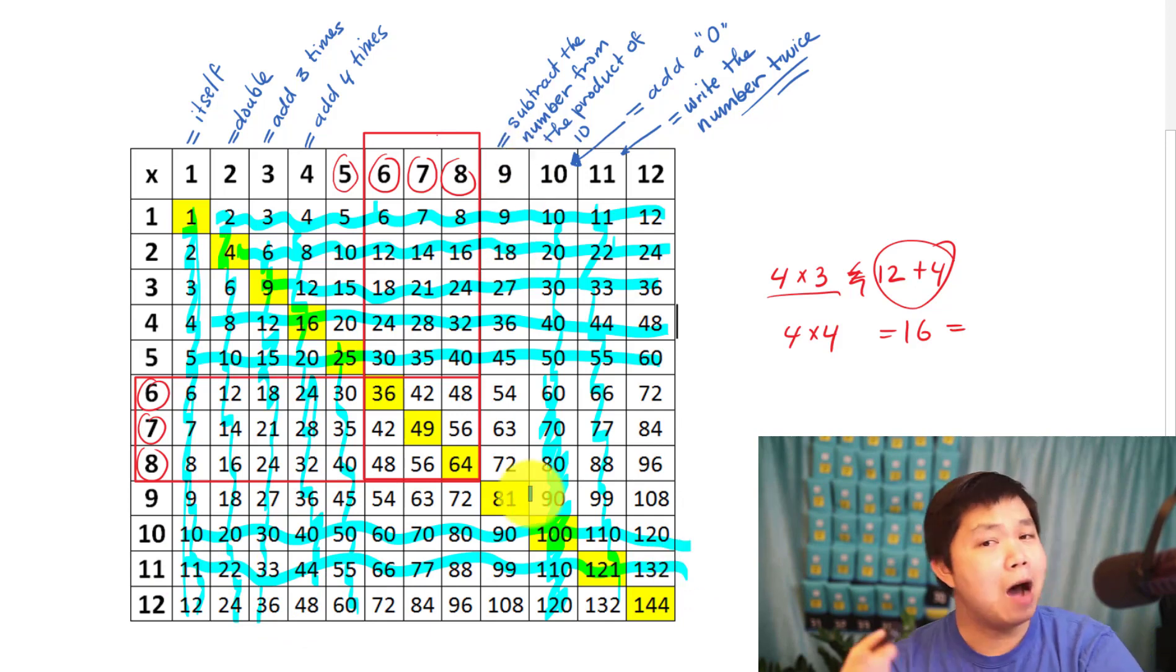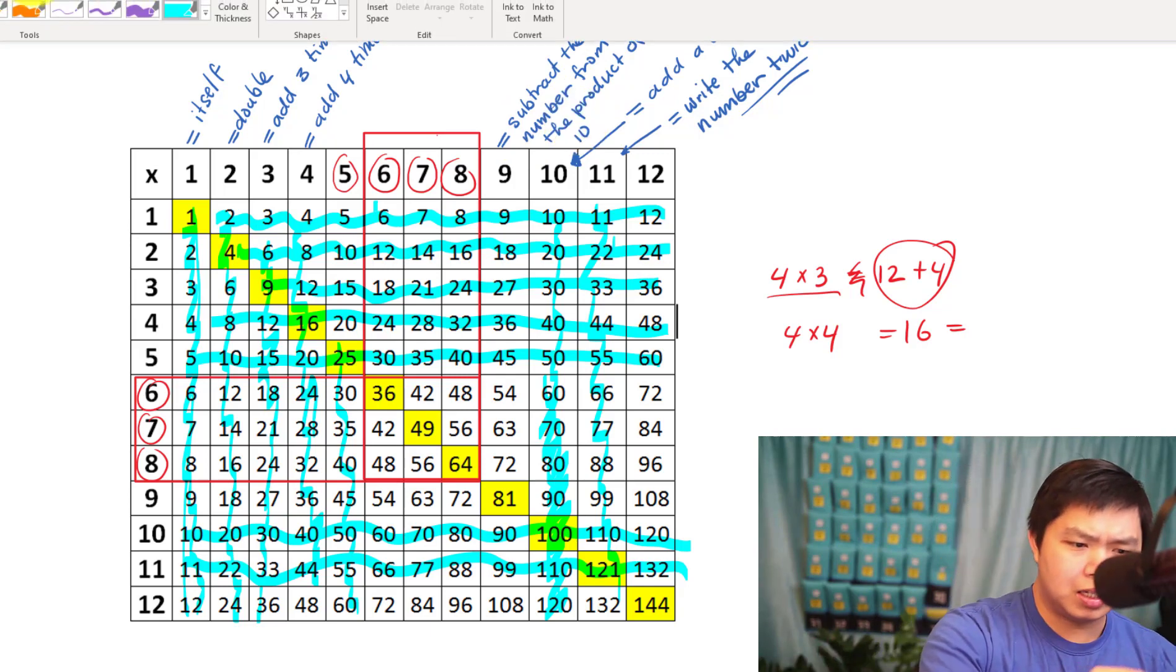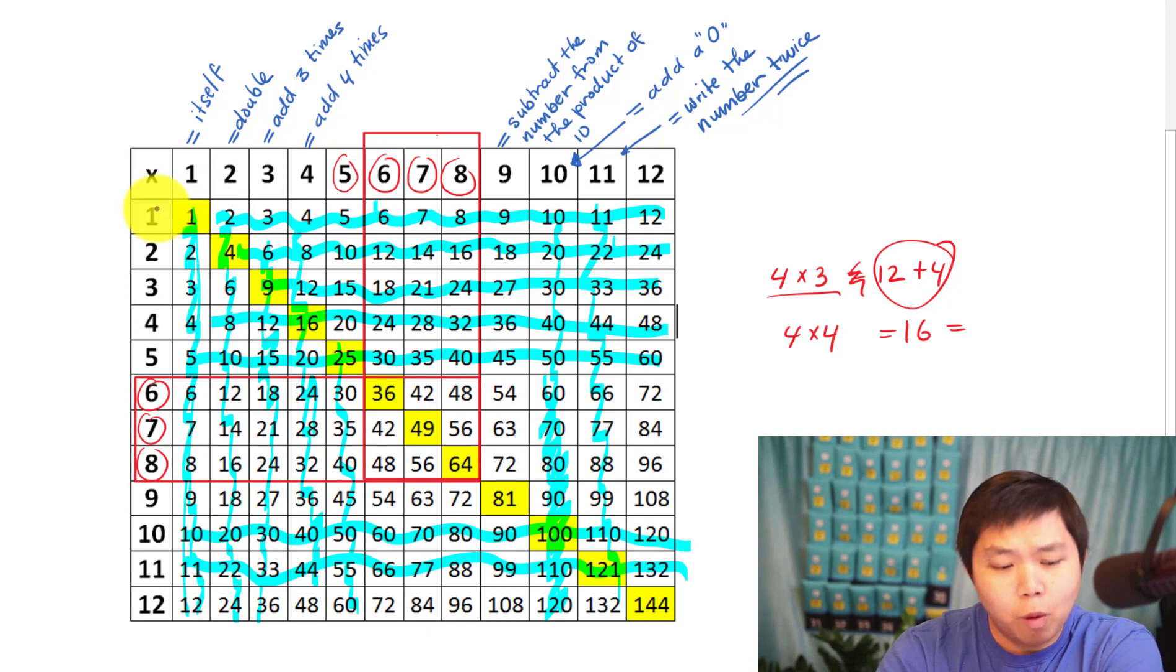Now, if you know ten, nine is really easy because all you do is subtract that number from the product of ten. What do I mean by that? So let me show you. We know that one times ten is ten. What's ten minus one? Nine. Look at that.